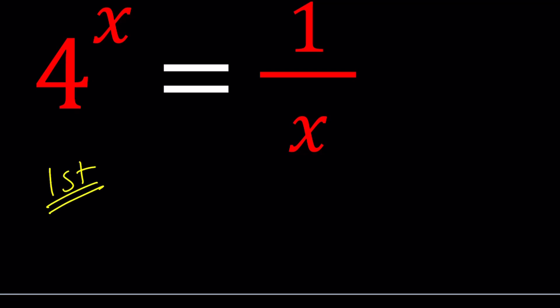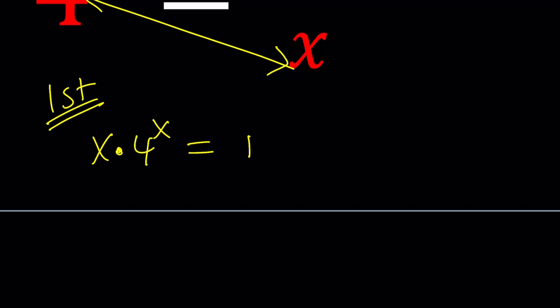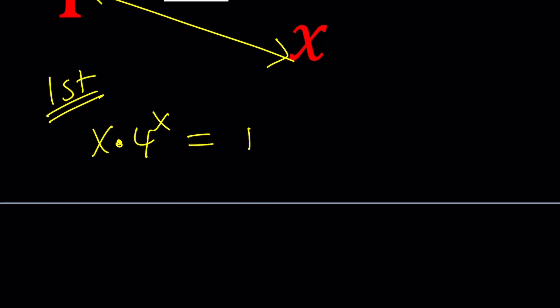So for my first method, I'm going to write this as a product. I want to cross-multiply. That's going to give me x times 4 to the power x equals 1. And x doesn't equal 0, we know that, right? So multiplying both sides by x is fine.